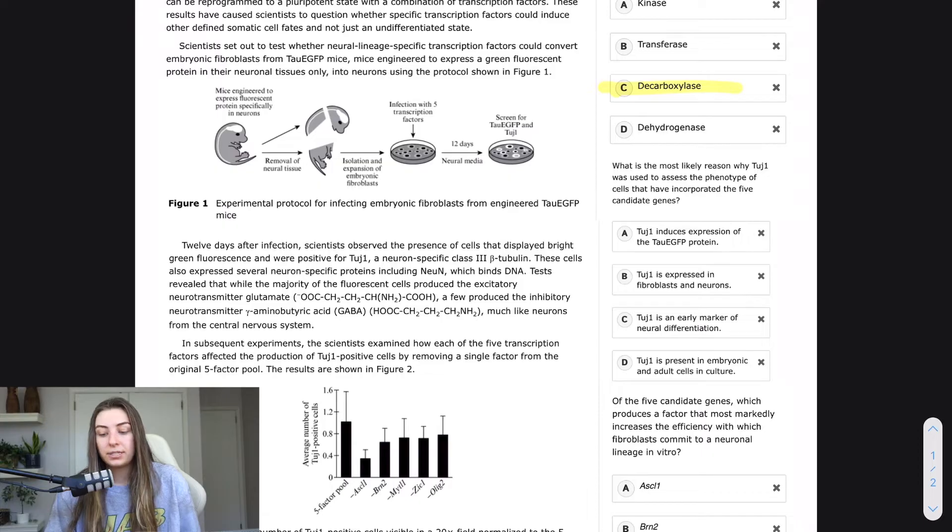And now it's a simple question that was answered kind of like right here, where it just says they were positive for TOOGE1, a neuron specific class three beta tubulin. I've even already said it in the explanation of this question. Why was TOOGE1 used? Because it was neuron specific and they were trying to see if they could convert fibroblasts into neurons. So if they found TOOGE1, then they were positive. Their experiment was awesome and they created neurons.